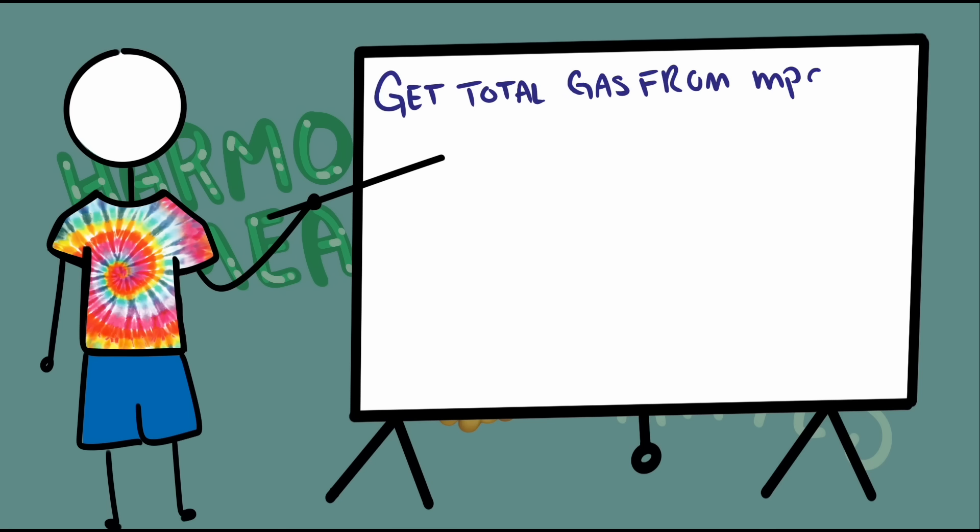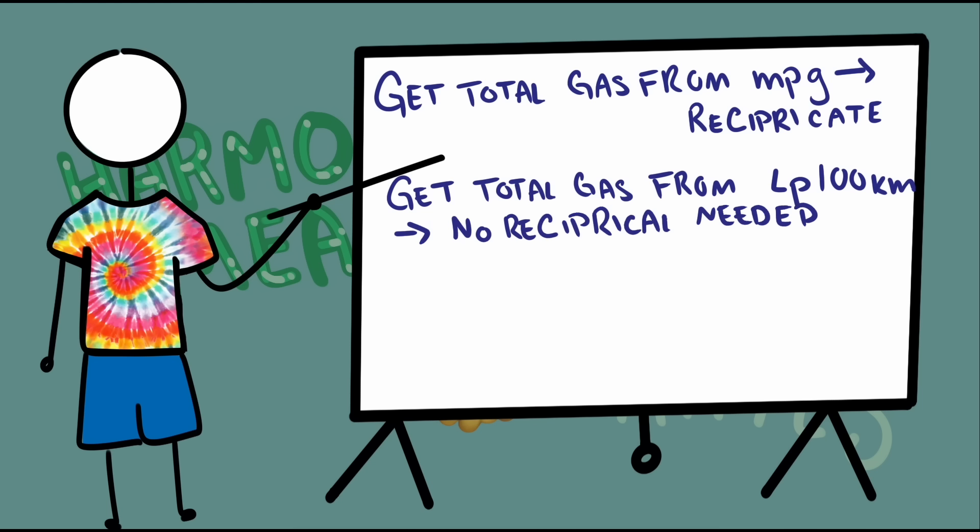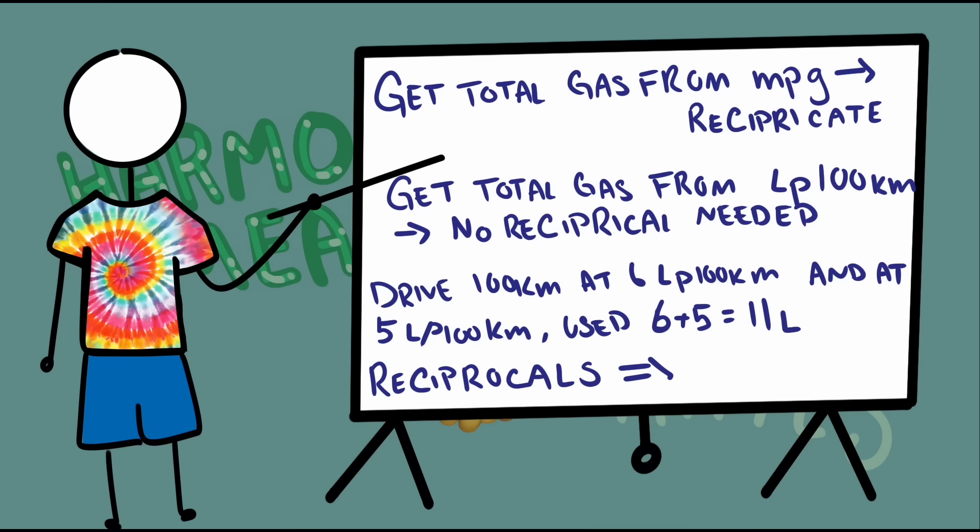Because to calculate the total gas used when given in miles per gallon, we need to use the reciprocal of the mileage. But the total gas used when represented by liters per 100 kilometers doesn't require a reciprocal. If you drive each car 100 kilometers, then you just add the mileages together to get the total gas used. So the rule of thumb is that if you need to reciprocate to find the total, then you probably need the harmonic mean.